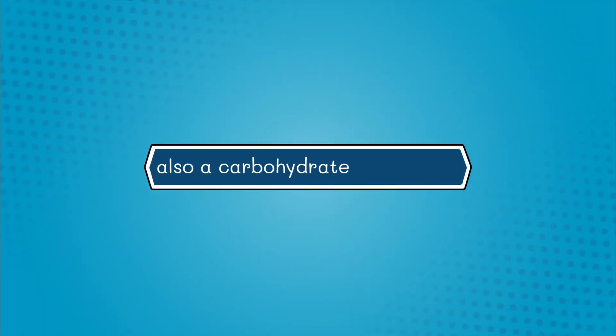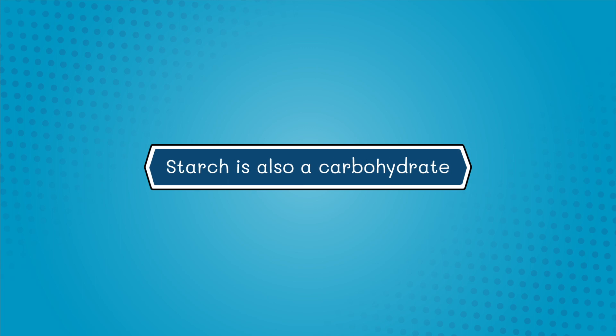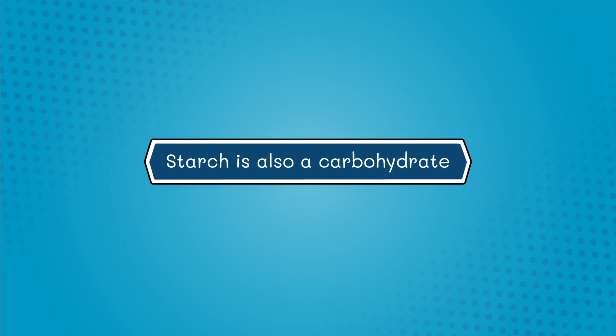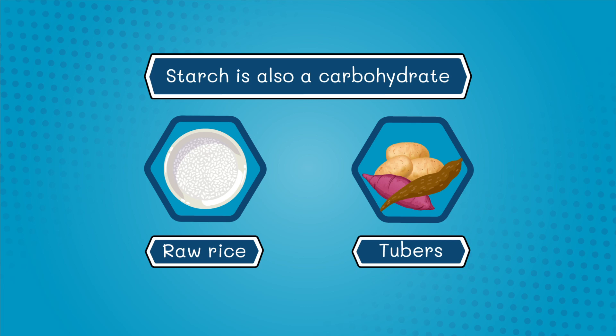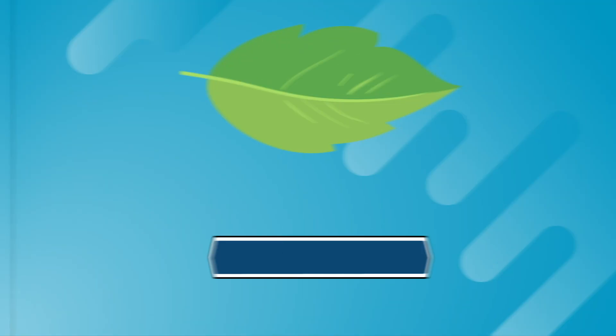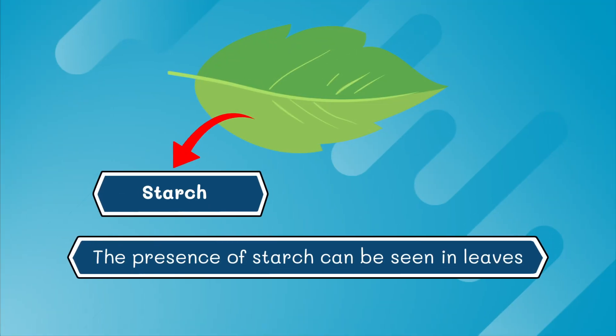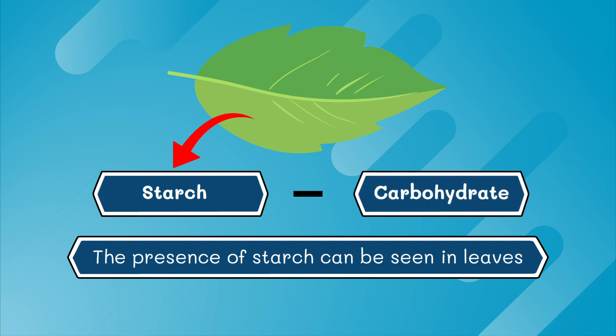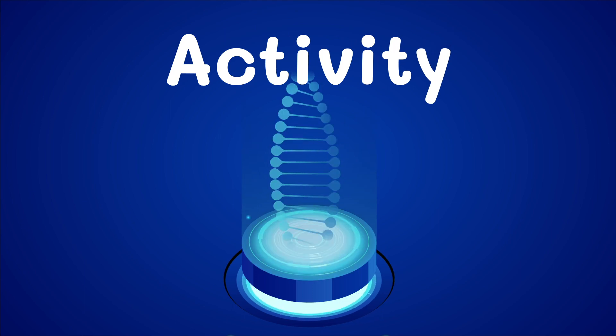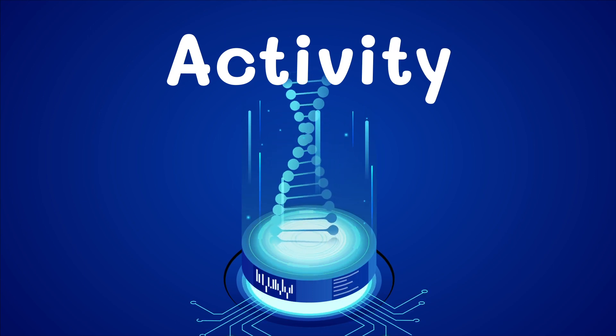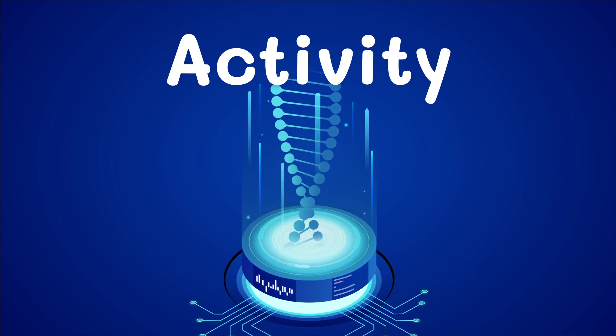Like glucose, starch is also a carbohydrate. Raw rice, tubers, etc. are examples of starch. The presence of starch can be noted in leaves as well, which indicates the occurrence of carbohydrates. Now, let us do an activity to test the presence of starch in leaves.